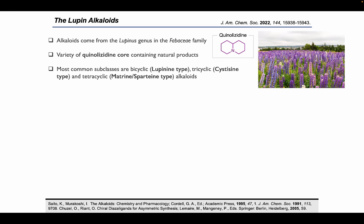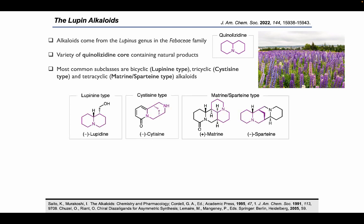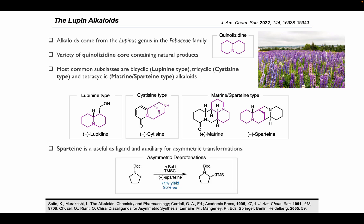Lupin alkaloids are based around a quinolizidine core, and they can come in bicyclic, tricyclic, or tetracyclic motifs. Two of the most famous members of the tetracyclic lupin alkaloids are both matrine and spartine. Matrine has been shown to have some really interesting broad biological activities, and spartine has been really useful for chemistry for asymmetric deprotonations. This chemistry was well developed by Peter Beek back in the 1990s.